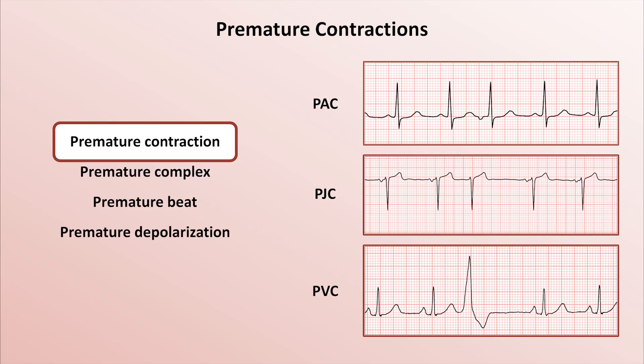At first glance, a PJC looks like a PAC with an early but otherwise normal-appearing QRS complex, but when you look closer you can see there is no preceding P-wave, so this QRS complex was triggered by a depolarization distal to the atria. It's often assumed this occurs in the AV node proper, but it could also be in the His bundle above the bifurcation of the bundle branches. PJCs are sometimes associated with retrograde P-waves following the PJC, or sometimes buried within the PJC. You rarely hear PJCs discussed because they are far less common than PACs and PVCs, and I won't be talking any more about them today.